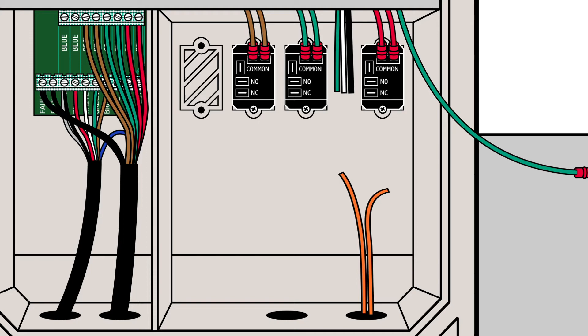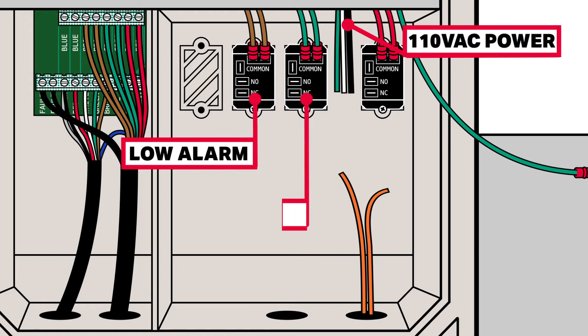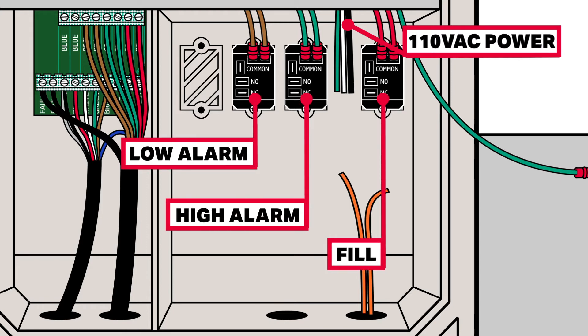In the high voltage area, there are three power wires for the power in connections: black, white, and green. There are also three relays for low alarm, high alarm, and fill, each with colored wire for its respective sensor rod.